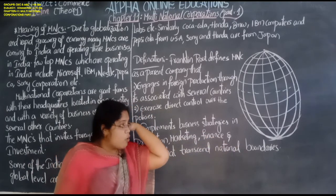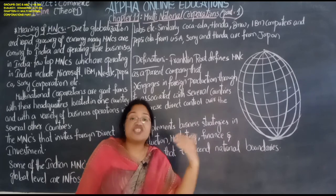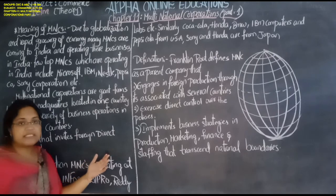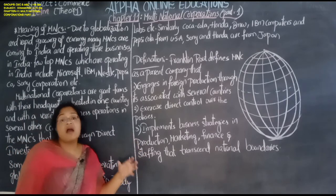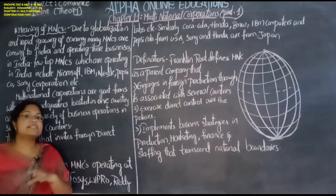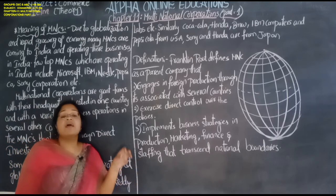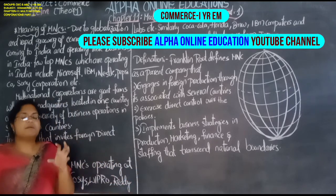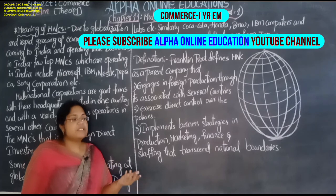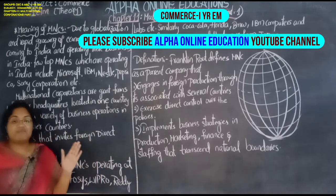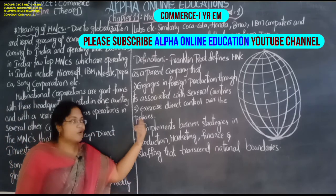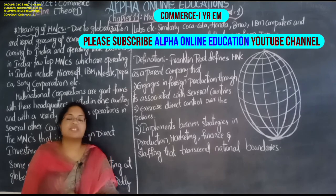These MNC companies transcend national boundaries — they move over and cross national borders. For example, Indian MNC companies cross India's boundaries and go to other countries, following the policies in those countries and implementing them in order to continue their business successfully. Let us meet in the next session with the objectives, advantages, and disadvantages of MNCs.